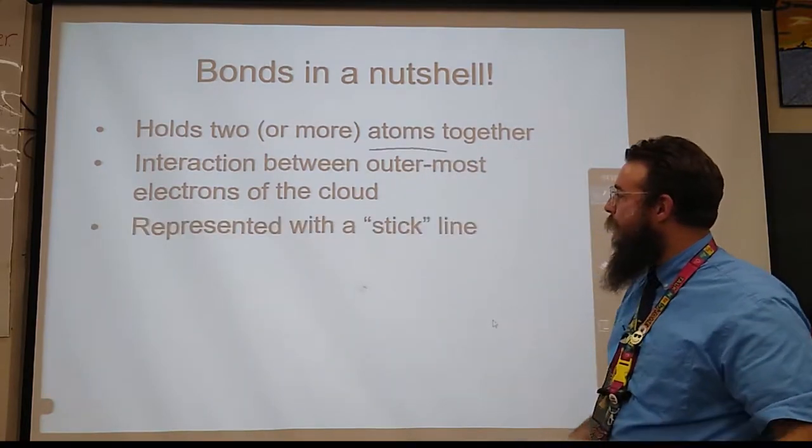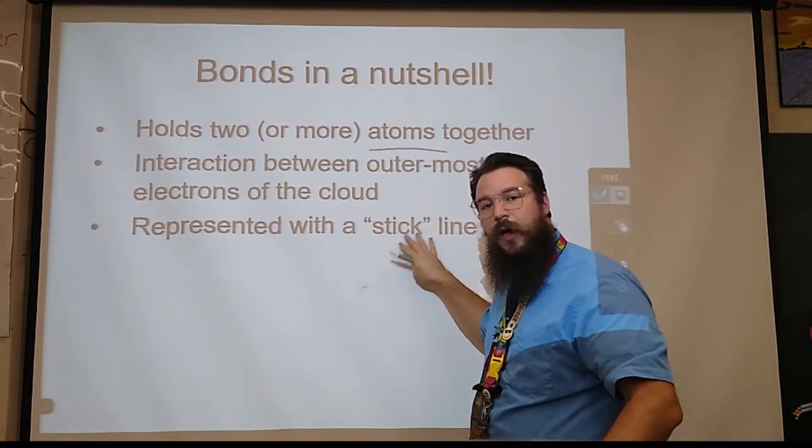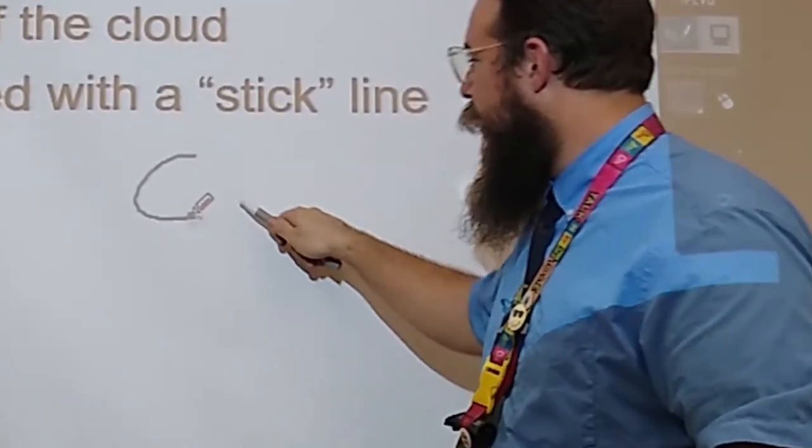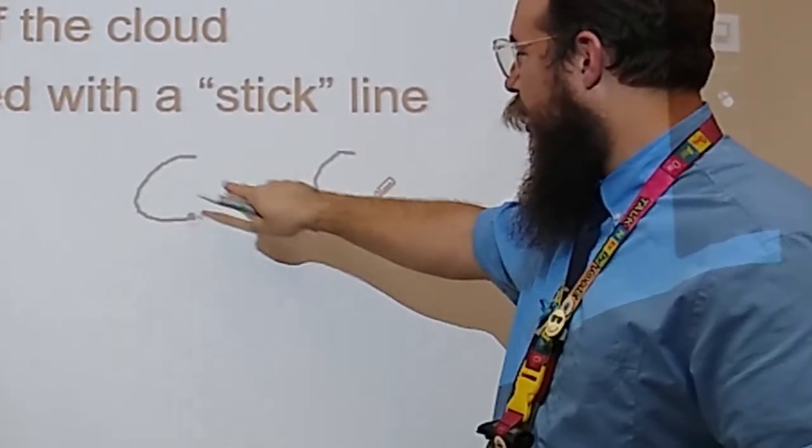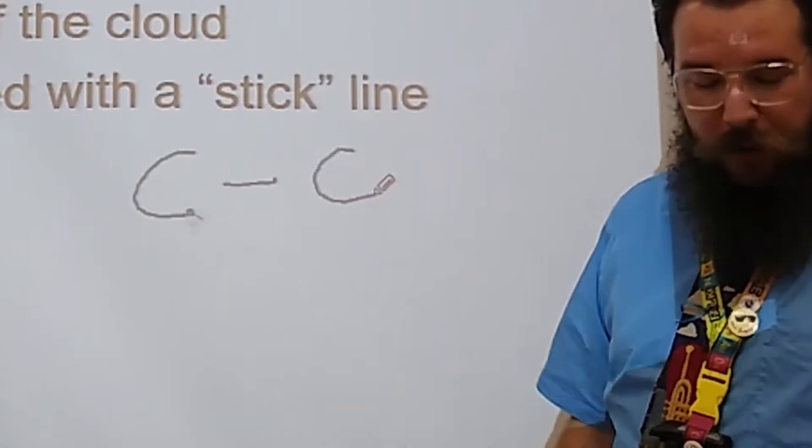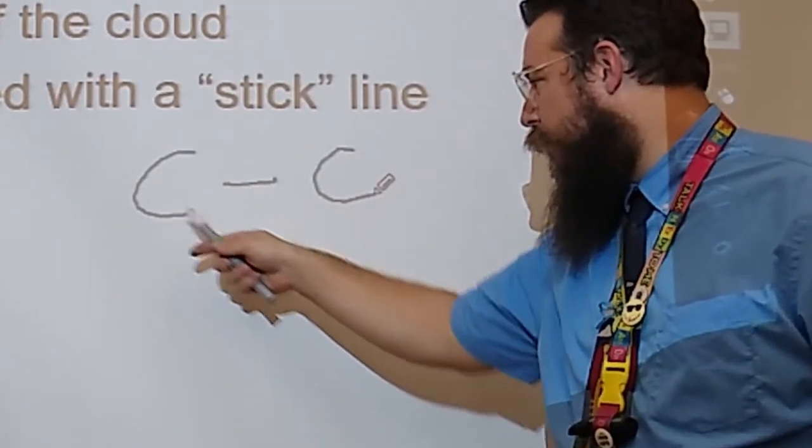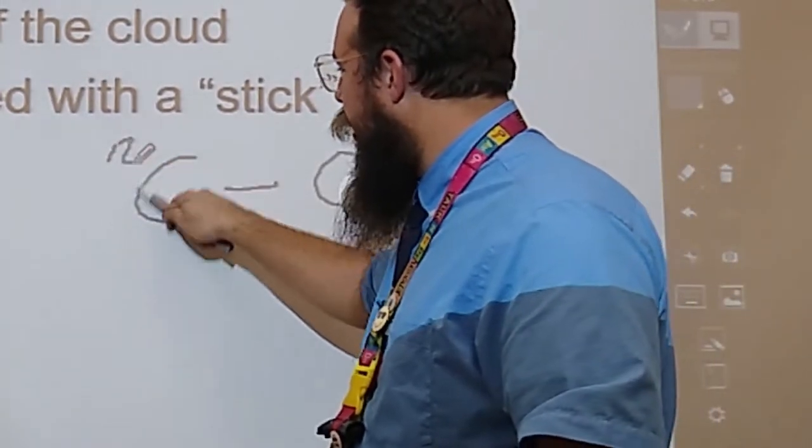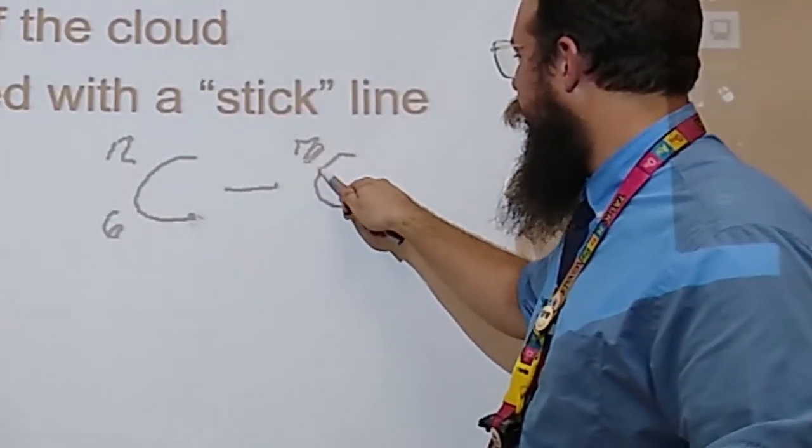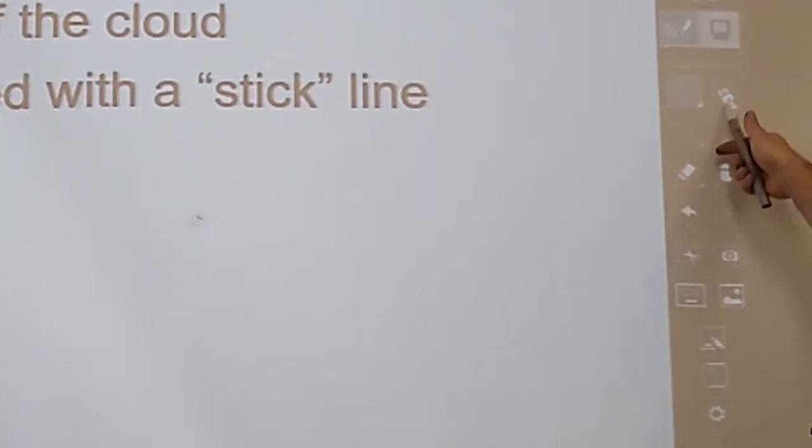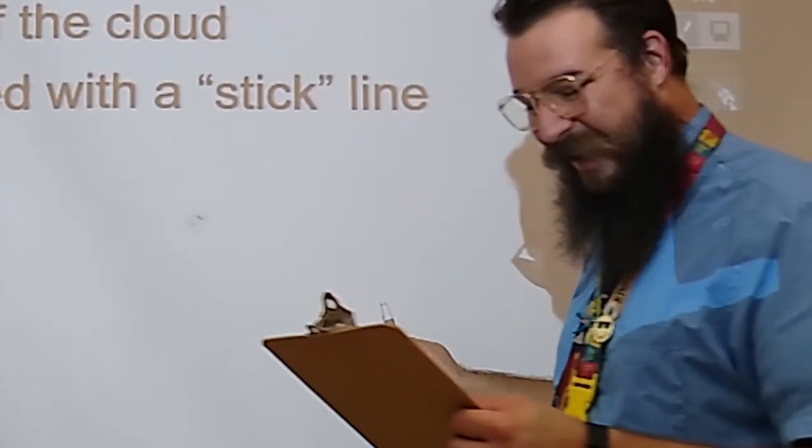Bonds are represented by drawing a stick or a line. For example, if I was going to bond a carbon to another carbon, I would draw a little line between them. That line represents a bond between two carbon atoms. You do not need to include all the numbers that go along with the symbol when we're showing the bonds, because the bonds will be enough work as it is.